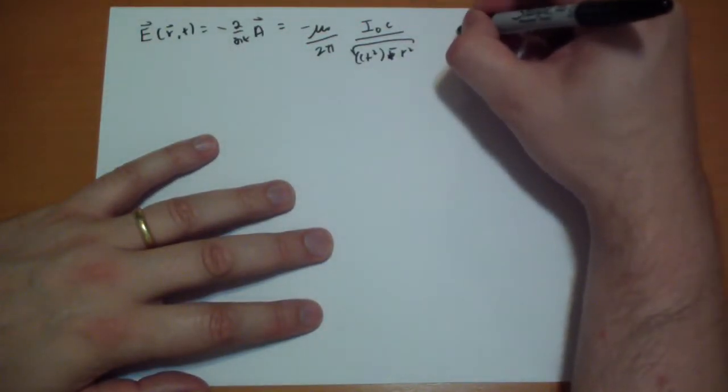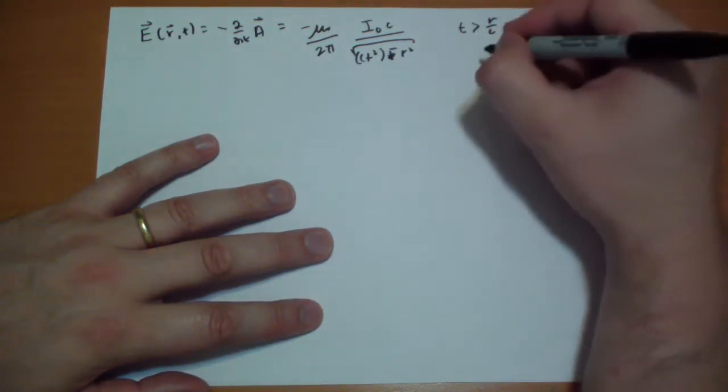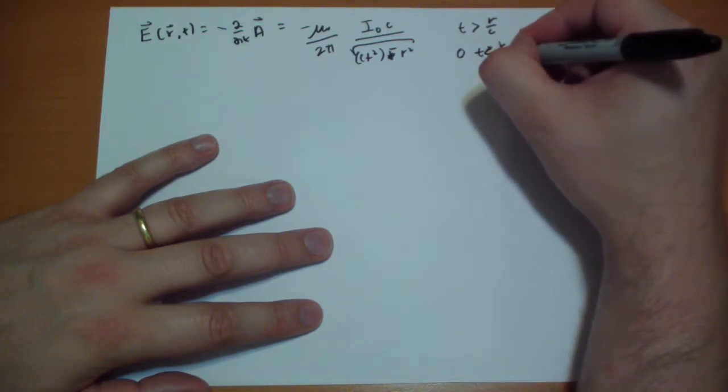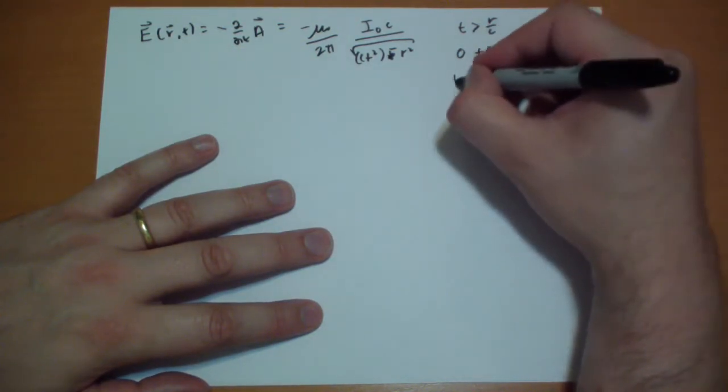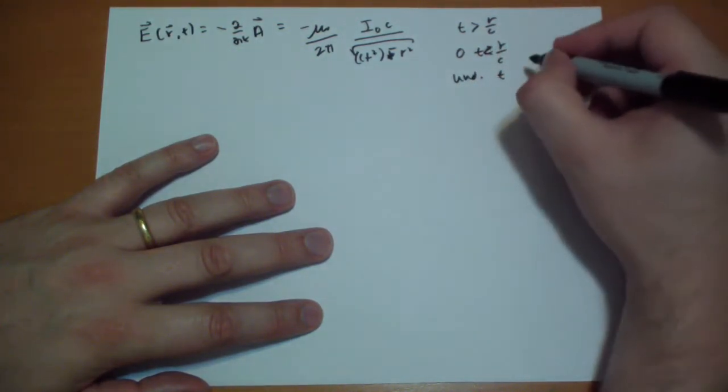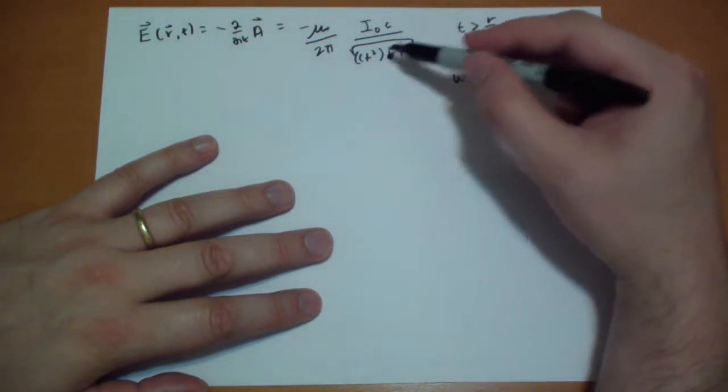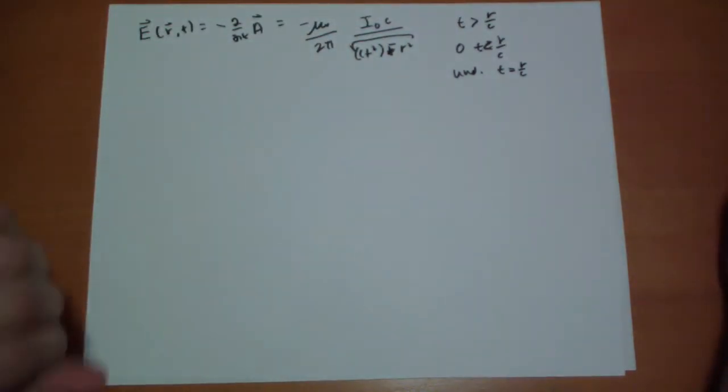And remember that's only for t is greater than r over c. It's going to be zero when t is equal to r over c. And it's undefined at t is equal to r over c. And you can kind of see why it would be undefined when t is equal to r over c. You're dividing by zero and you can't do that. So there's a discontinuity in that guy.